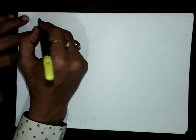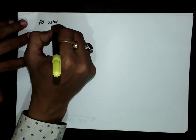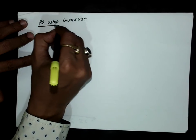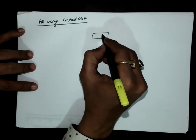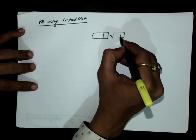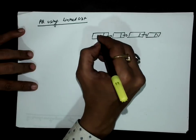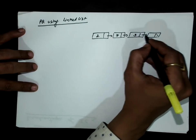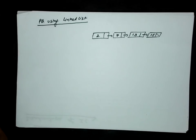Suppose we have to implement a priority queue using a linked list. The implementation is very simple. Let us suppose this linked list is actually behaving like a priority queue, and some elements are already there: 2, 7, 3, 13, and 15. The lower number represents the higher priority.